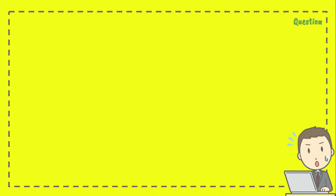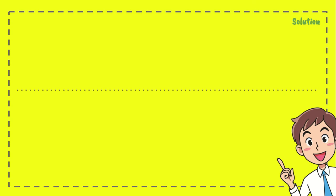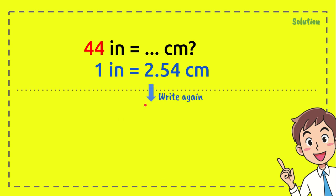Now I will write again the question so we will remember the question. The question is 44 inches equals how many centimeters, and this is the solution. First, just write again the question, and after that, just write again the formula. And the next step, just write again the formula once more.